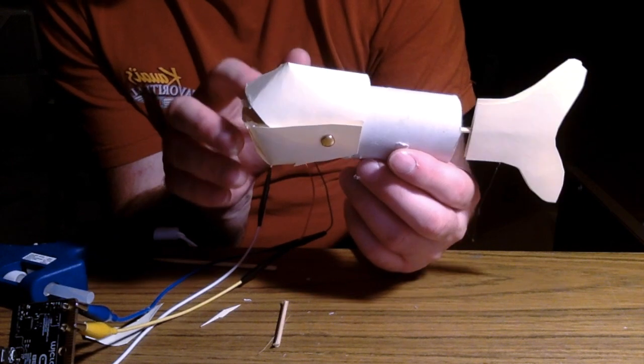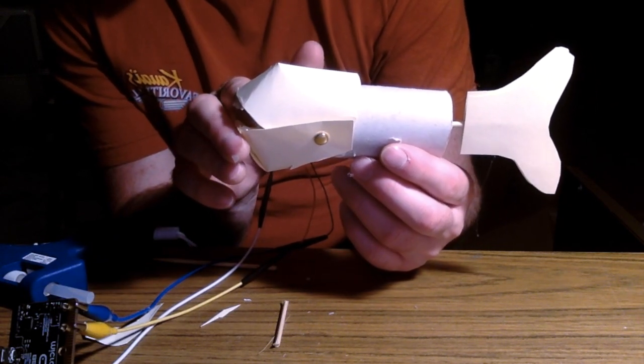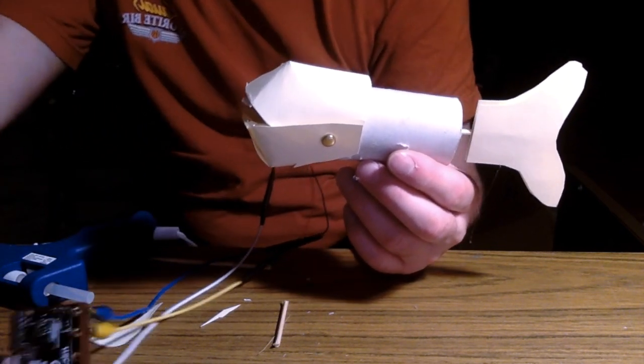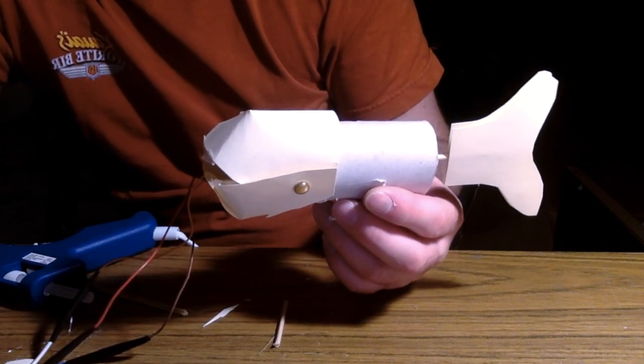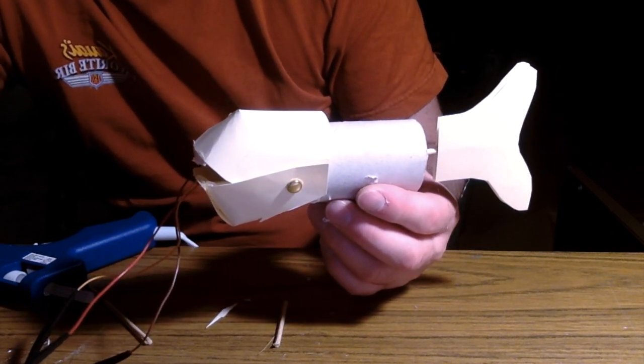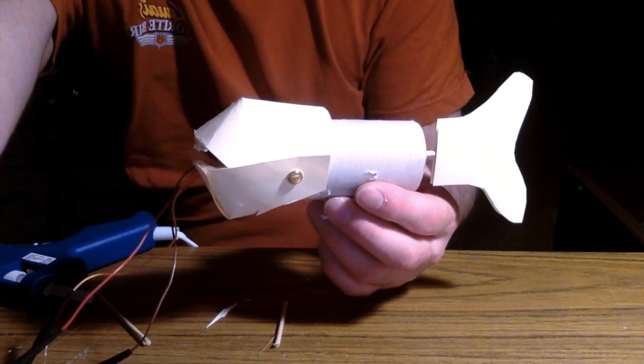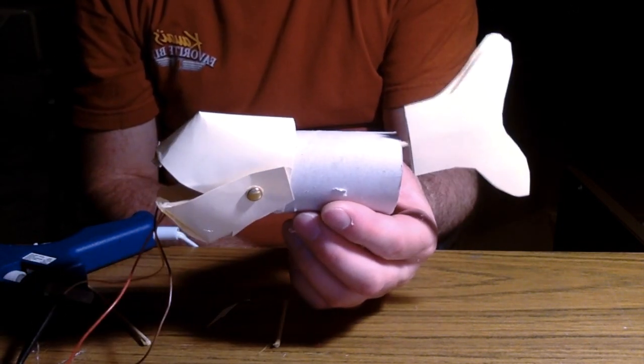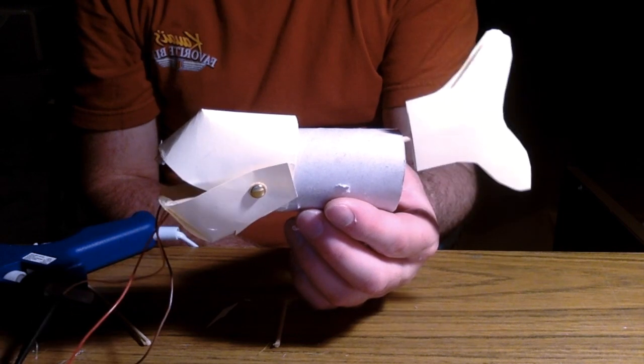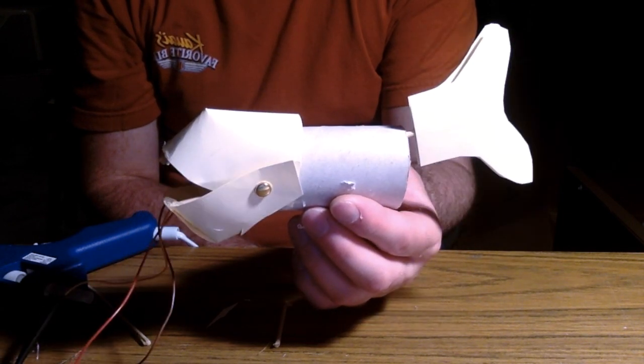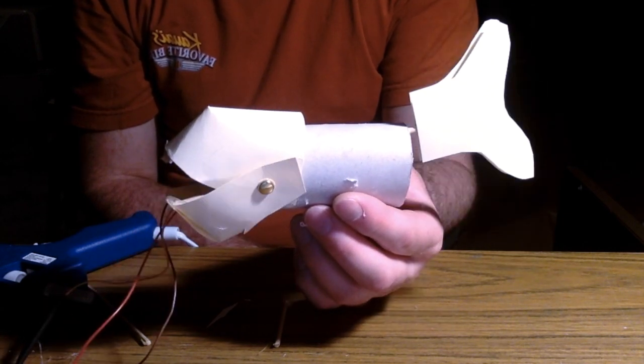An improvement I can make is cut a little hole in the bottom and run these wires through that hole so they're not coming out of the mouth, because it looks kind of silly with the wires coming out of the mouth. Let's plug this in and see what happens. That's pretty good! The mouth opens and closes, tail moves.